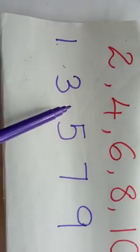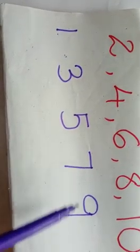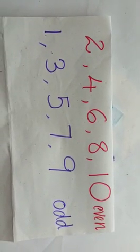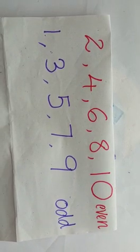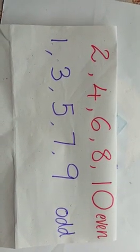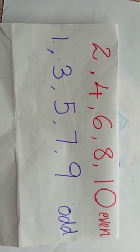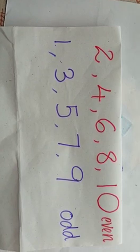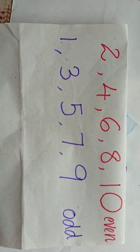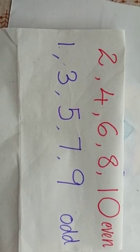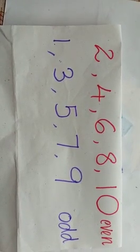One, three, five, seven, nine — these numbers are called odd numbers. These odd numbers have no pairs. The numbers that end with two, four, six, eight, or zero are called even numbers. And the numbers that end with one, three, five, seven, or nine are called odd numbers.